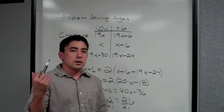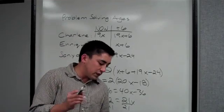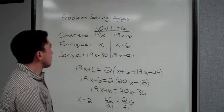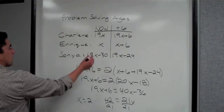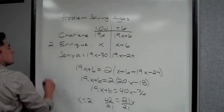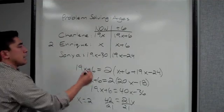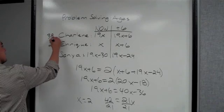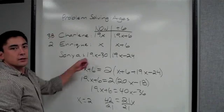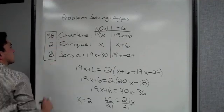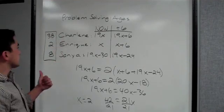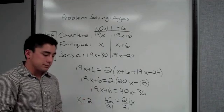But always remember, even if you found X, what is it asking for? It says find how old is each person now. So you go to your now column and you're going to plug in 2. So right now Enrique is 2, Charlene is 19 times 2, which is 38, and Sonia is 30 years younger than that, so that makes her 8. So these three numbers would be your answer: Enrique is 2, Charlene is 38, and Sonia is 8.